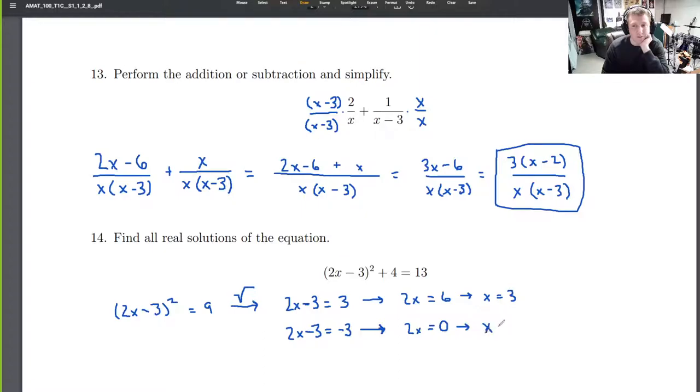2 times something is 0. That something must be 0. Better be 0. So let's, we can check it just to verify. 0 minus 3. So it's negative 3 squared. Negative 3 squared is 9. 9 plus 4 is 13. 13 equals 13. We've got it. Here are the real solutions.